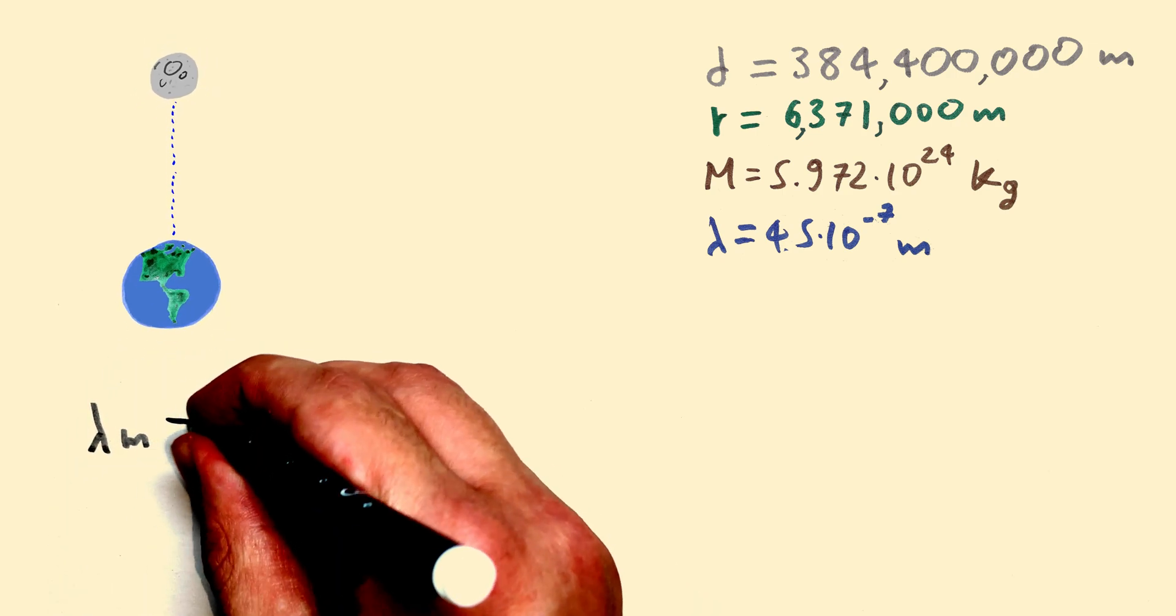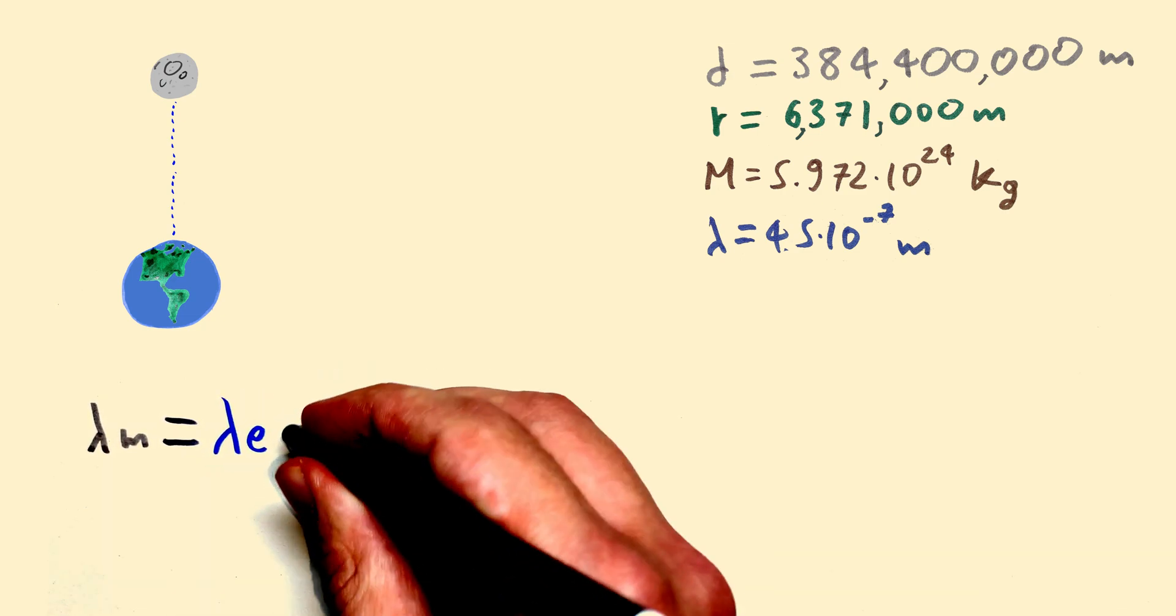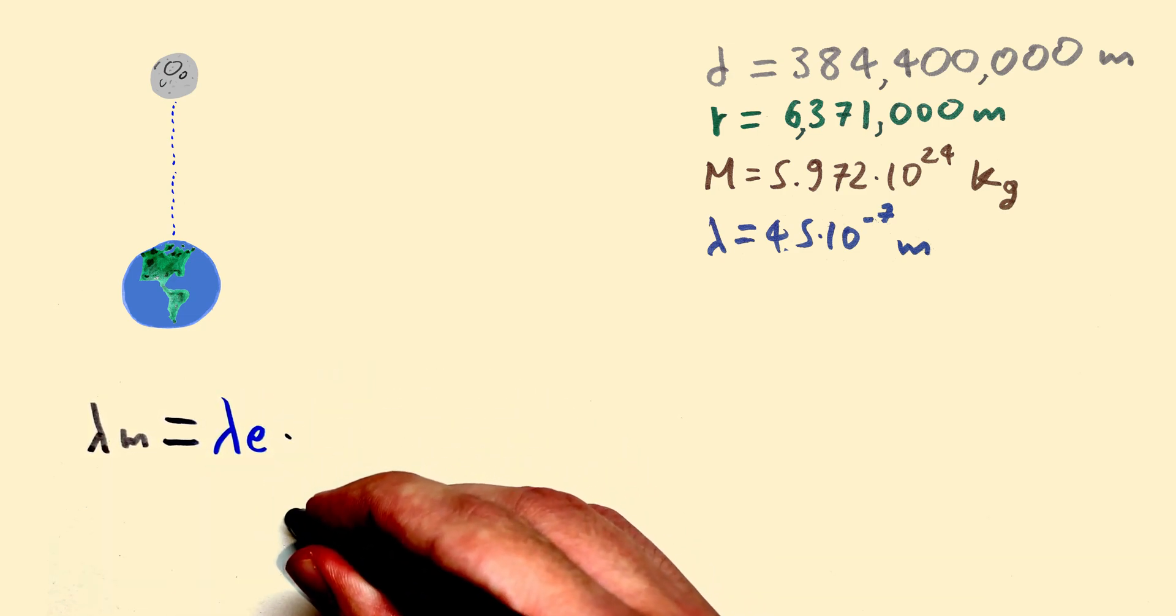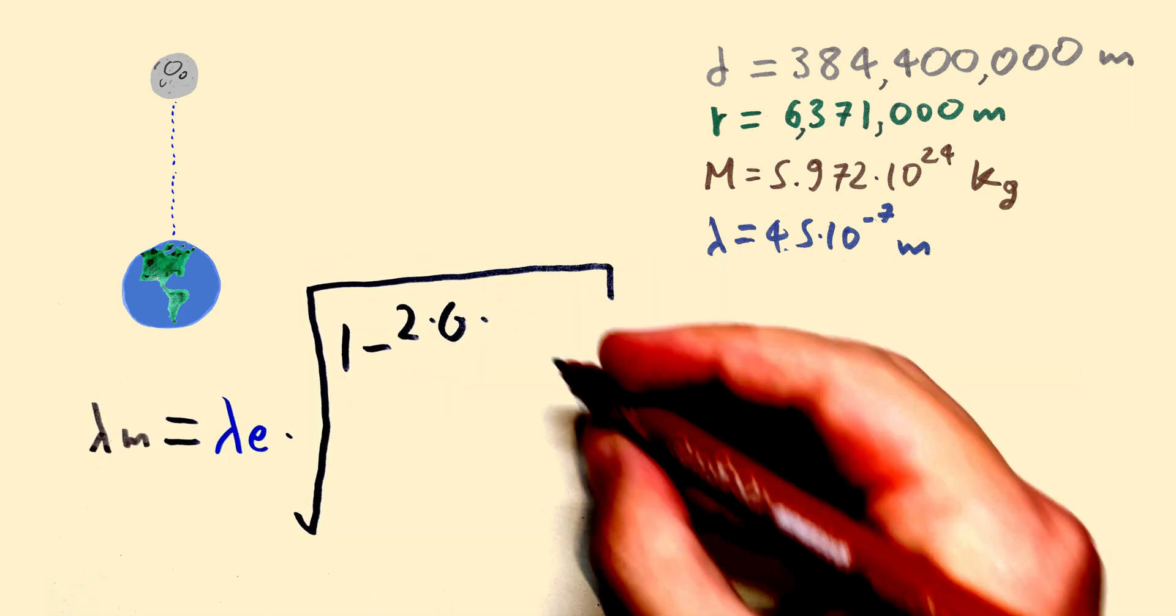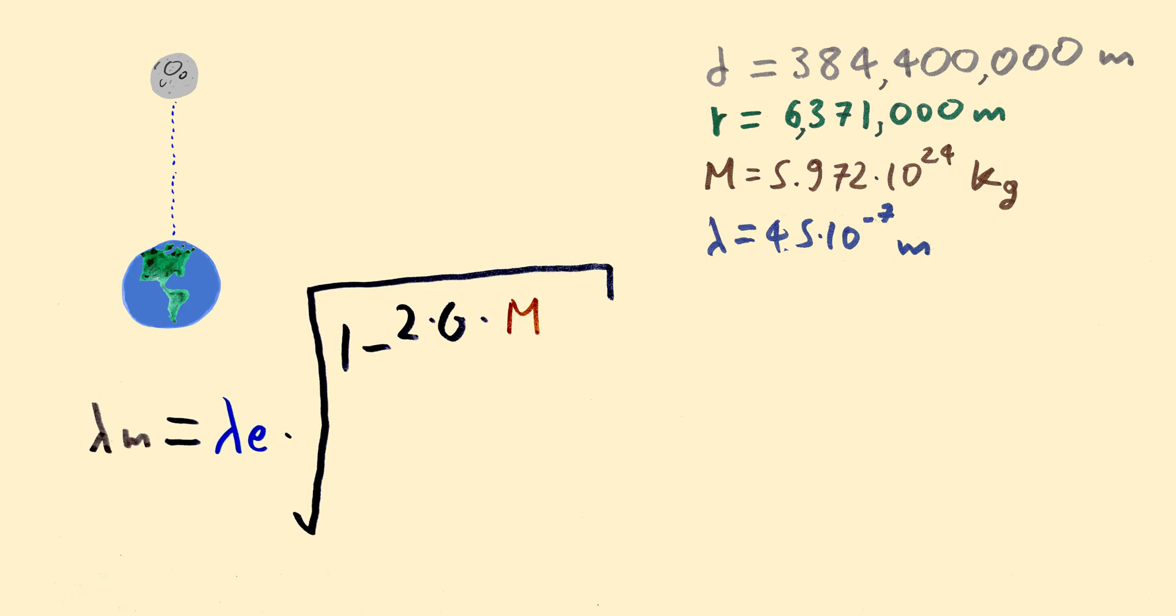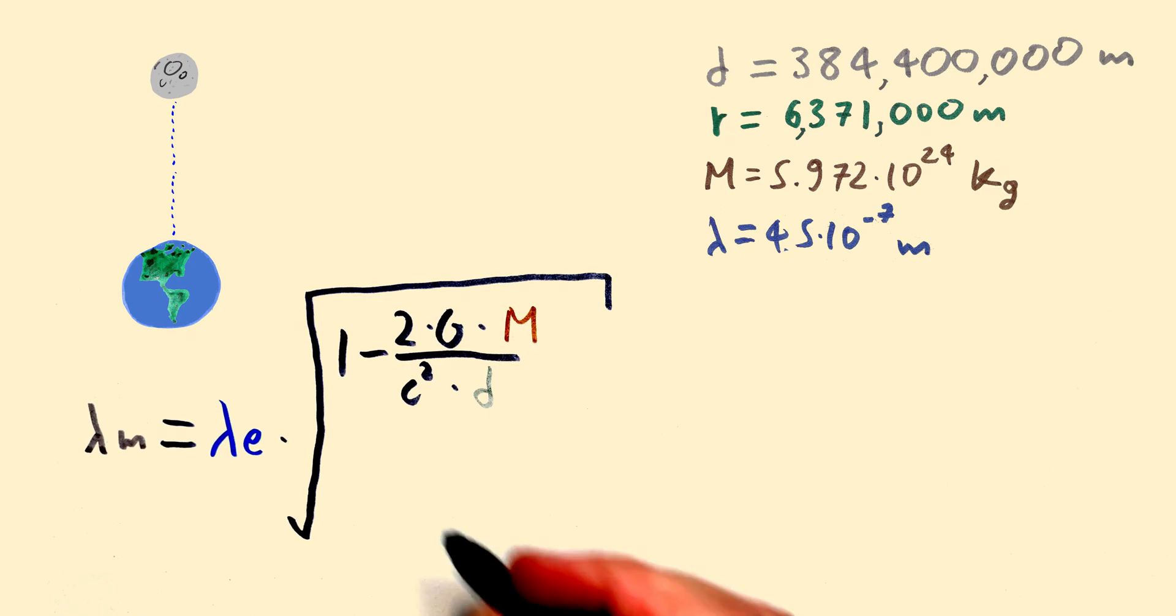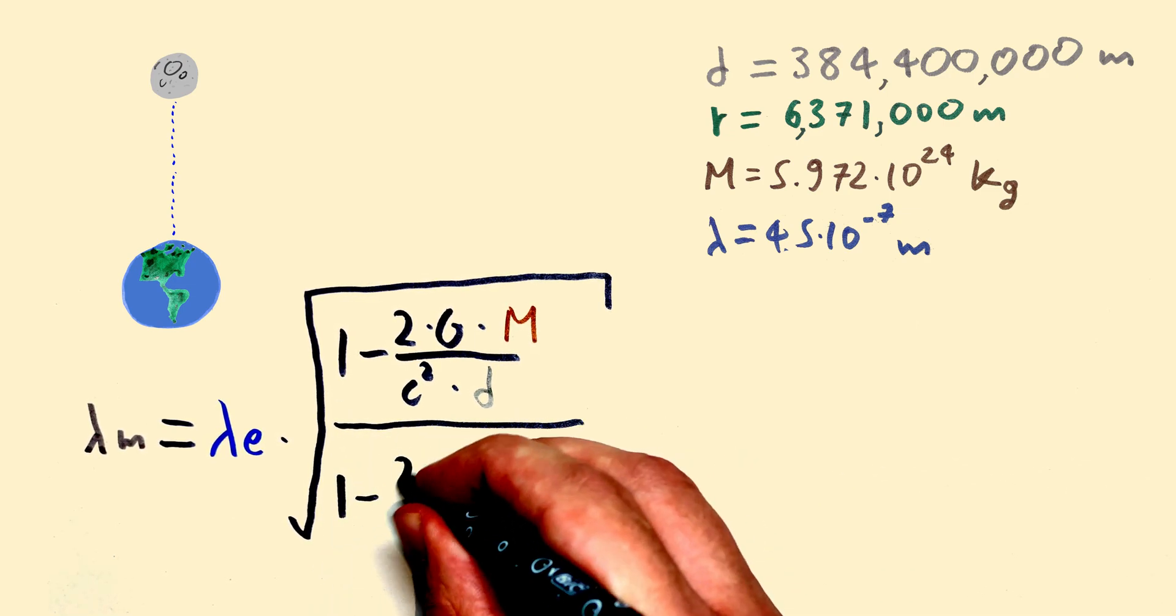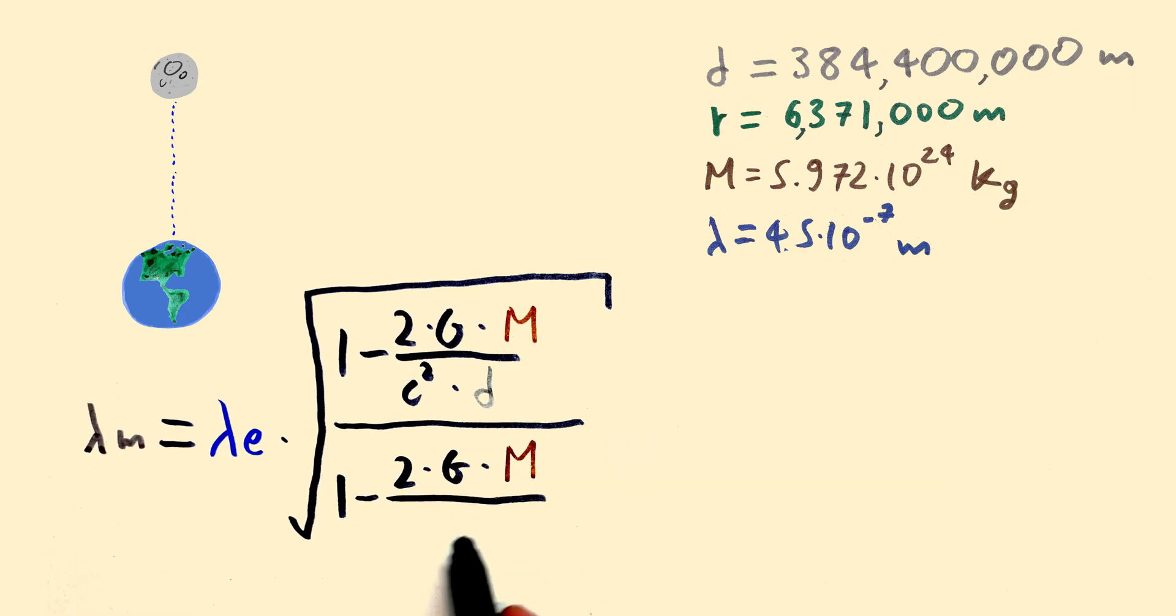The wavelength on the moon is equal to the wavelength on the earth times, take a deep breath, the square root of 1-2 times the gravitational constant times the mass of the earth, divided by the speed of light squared times the distance of the moon to the earth, divided by 1-2 times the gravitational constant times the mass of the earth, divided by the speed of light squared times the radius of the earth.